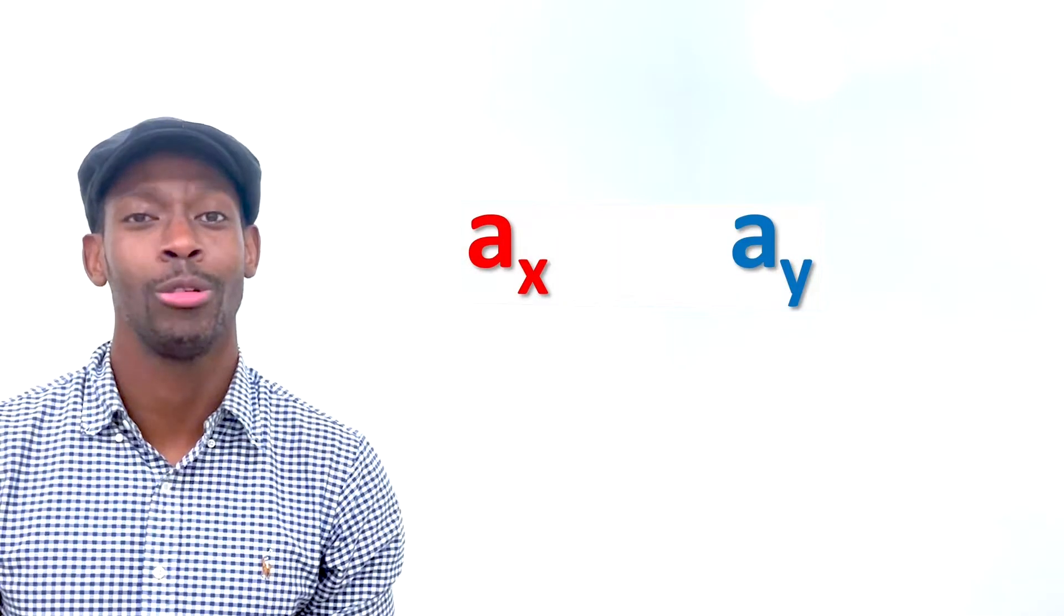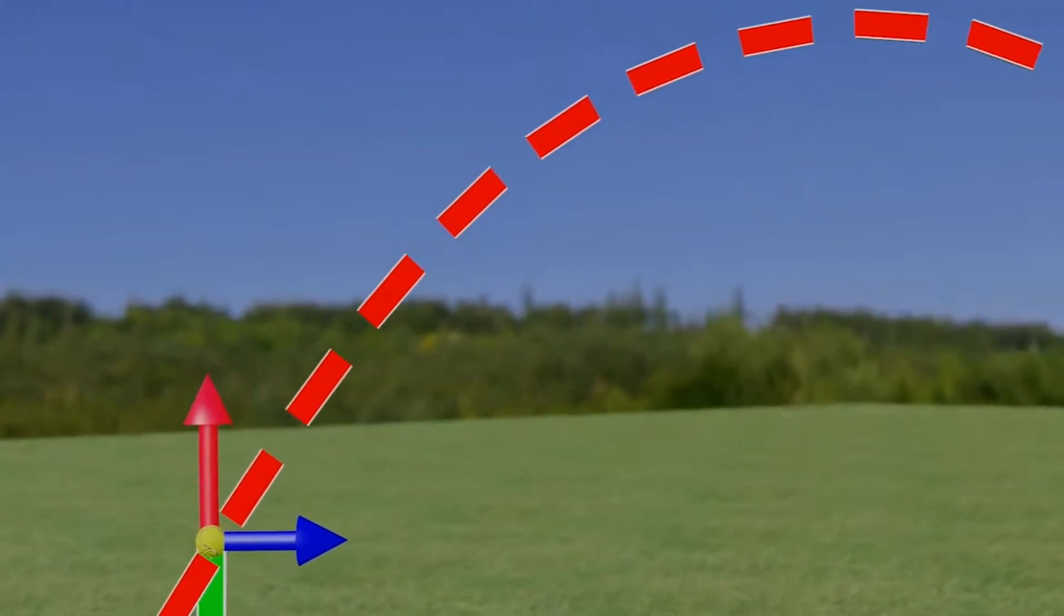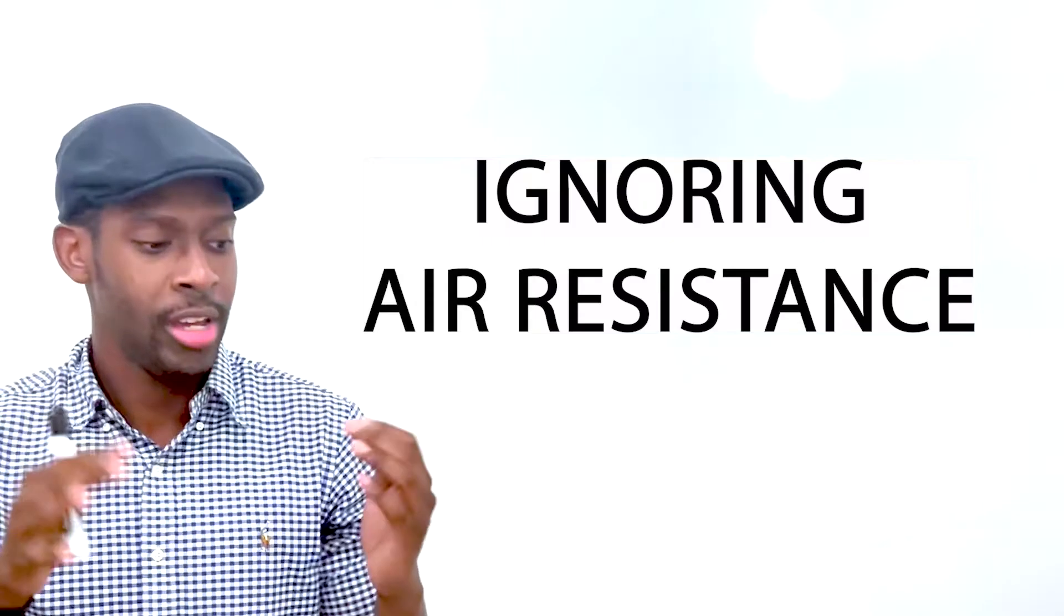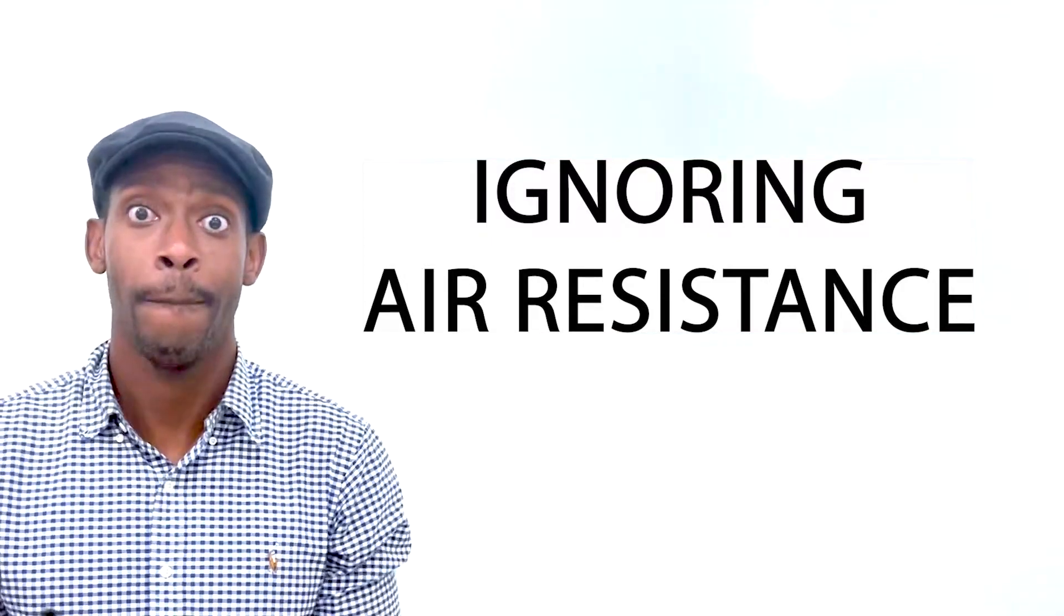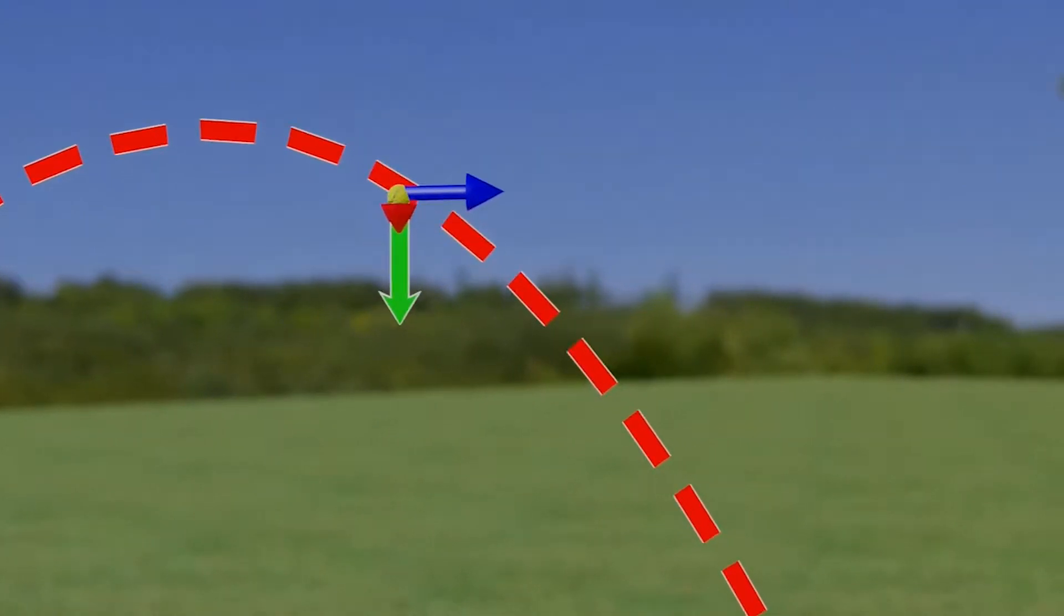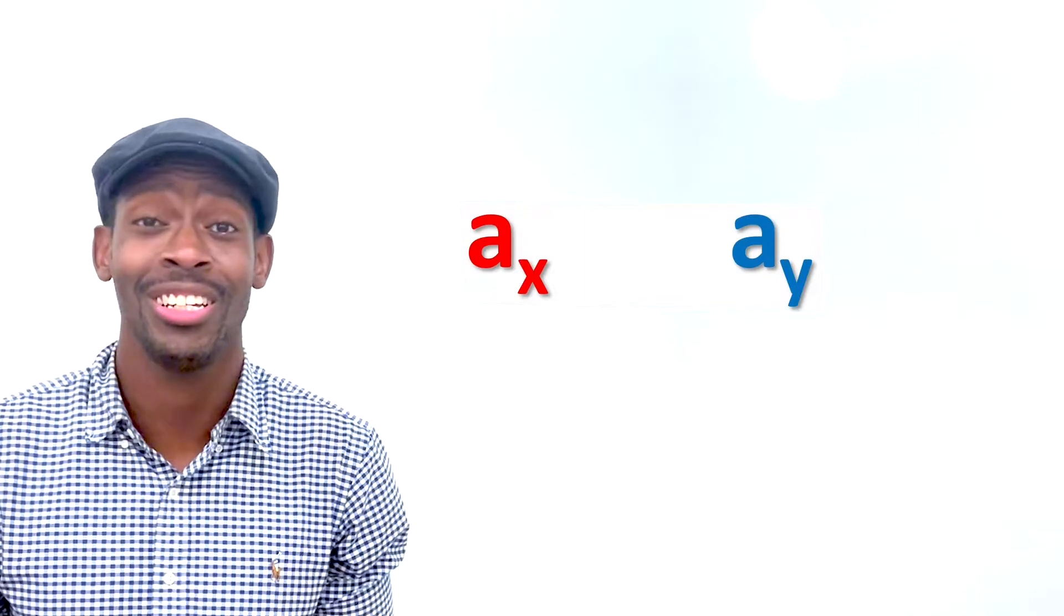However, with acceleration, there's something a little tricky going on here. Objects don't accelerate on the x-axis as they fly through the air, ignoring the air resistance that is actually everywhere. It takes a force to change the velocity of an object. So if there are no forces, the acceleration on the x-axis is always zero.